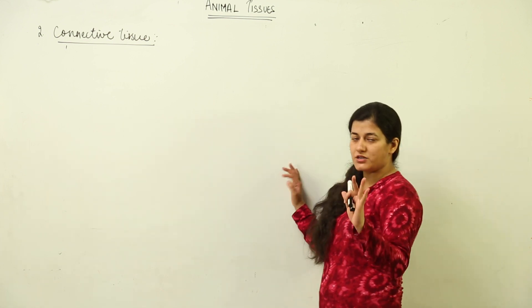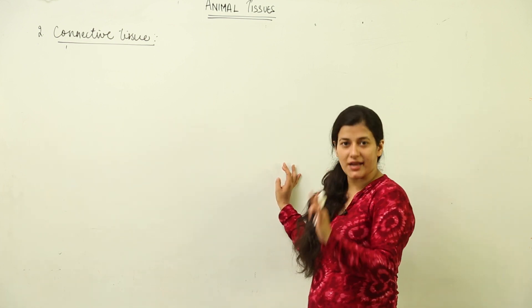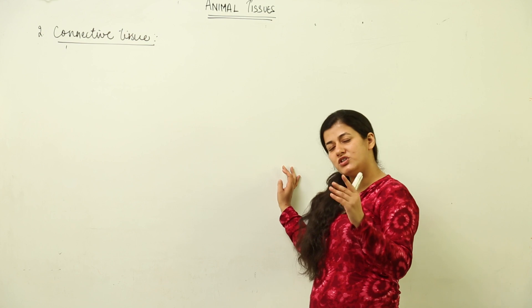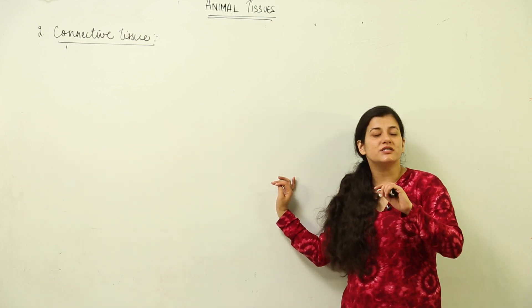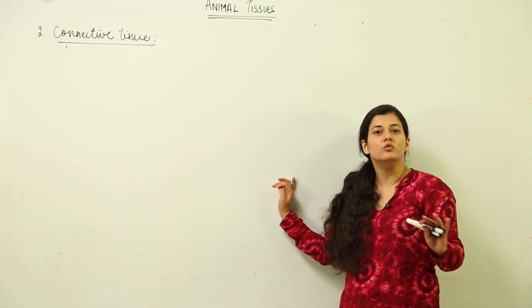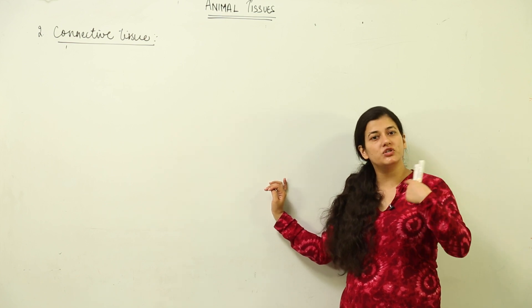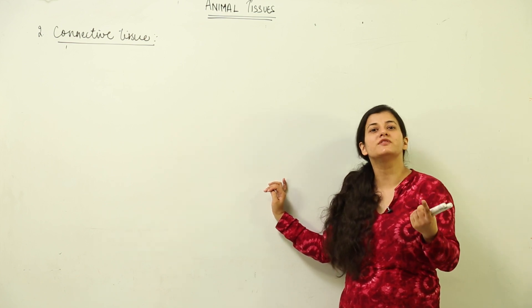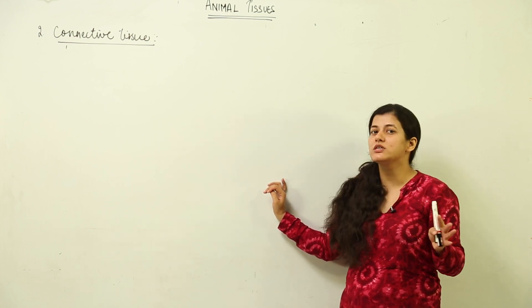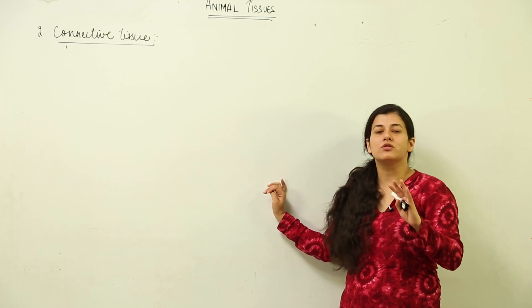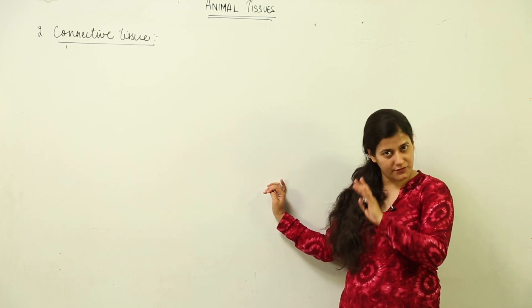Before we go further to bones and ligaments, we need to be introduced to white fibrous connective tissue. This tissue is not at all movable and it is present at the joining between the bones of the skull.